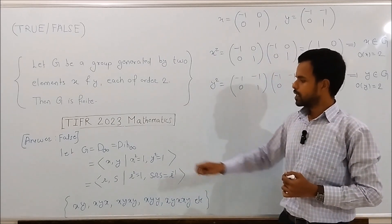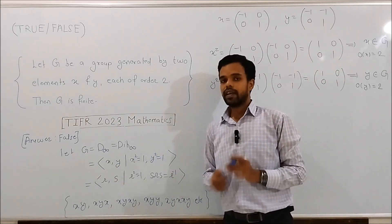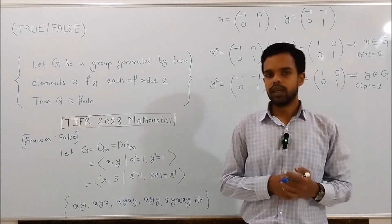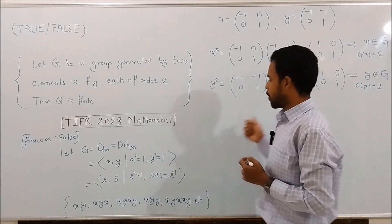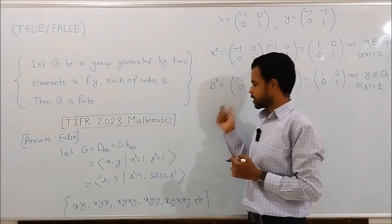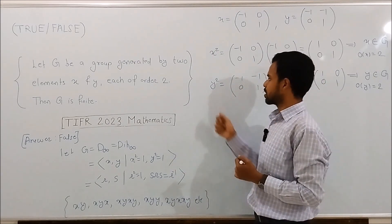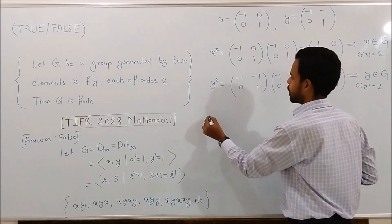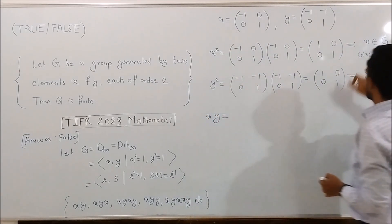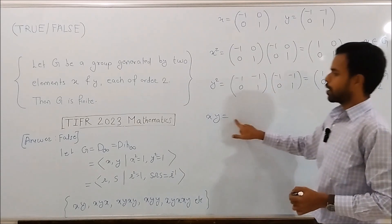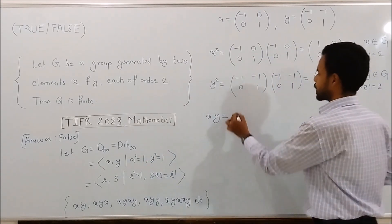We will claim that this group G, generated by x and y, is infinite. To show this, we will find some element of this group which has infinite order. Consider the element xy. Since x belongs to G and y belongs to G, xy must belong to group G.